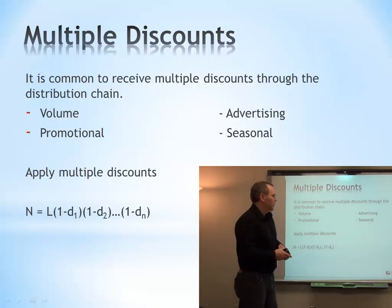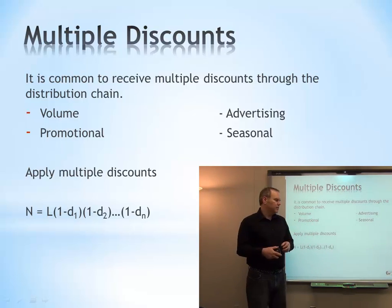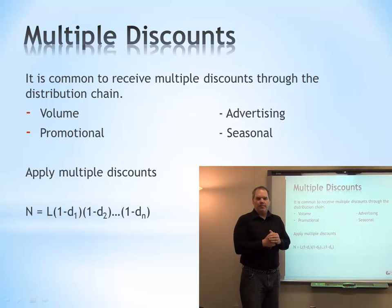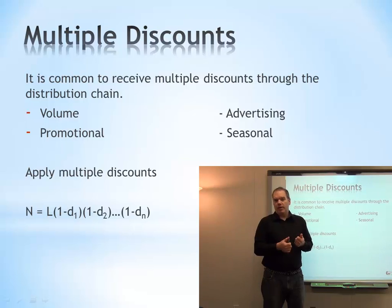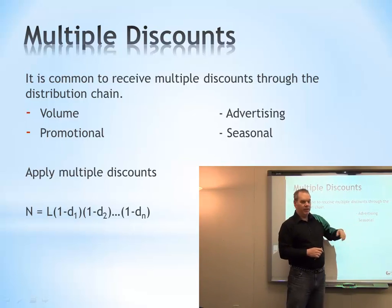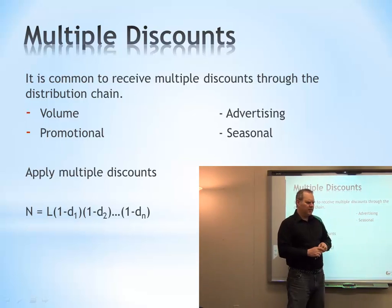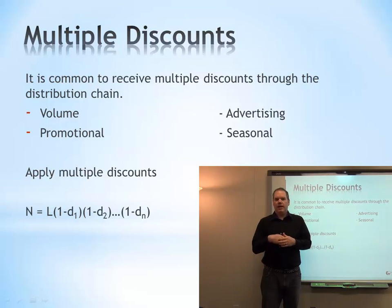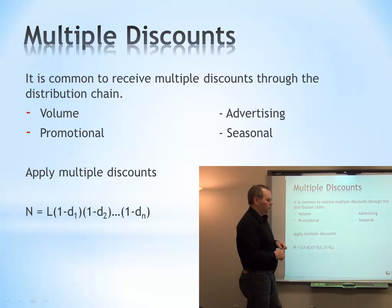We might also get multiple discounts. Types include: volume discounts — if we buy more than $50,000 in a year or $10,000 in a month, we get a discount; promotional discounts — at certain times of year to get more product into the market; advertising discounts — where the distribution chain pays us back for advertising we do, which is very common when retailers put out flyers; and seasonal discounts — such as after Christmas or after summer when there's a sale on swimsuits.